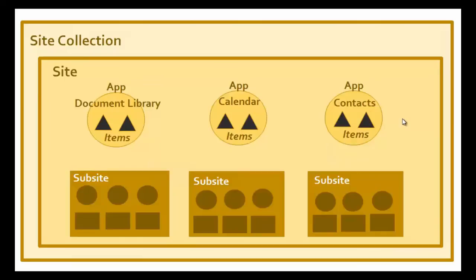These applications could be a document library, a calendar, or a group of contacts. Inside those apps are items — so inside a document library would be a set of documents, and inside a calendar would be appointments. A site can also contain a number of subsites within it, which allows you to create a structure very reminiscent of a traditional file share arrangement.